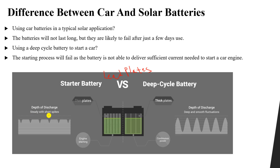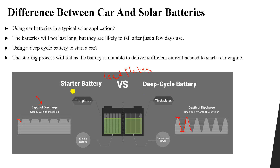In terms of discharge depth, the car battery discharges only a little bit to provide large power in a short time, then gets charged again by the alternator — small spikes of discharge. In contrast, the deep cycle battery can discharge very deeply, for example from 100% down to 20%, then recharge and deep discharge again. That is why it is called a deep cycle battery.